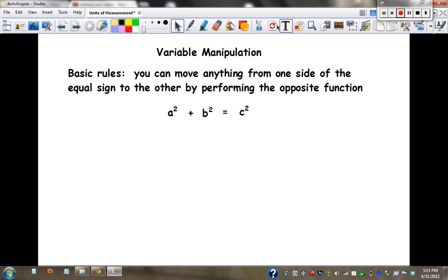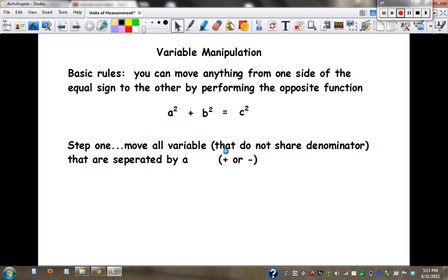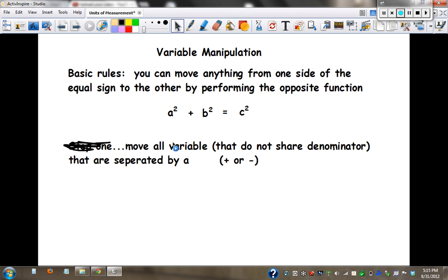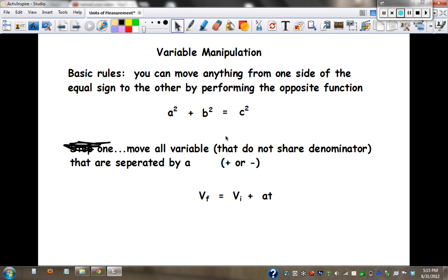Next rule. Next thing we need to do is move all the variables that do not share denominators that are separated by a plus or a minus. Here's an example. I would like you to isolate the a and move everything else to the other side. So we have vf equals vi plus at. Which one does this rule say we should do first? Move the variables that are separated by a plus or a minus. So we would do minus vi on both sides. Vf minus vi equals at. And now you can do the final step in solving for a.